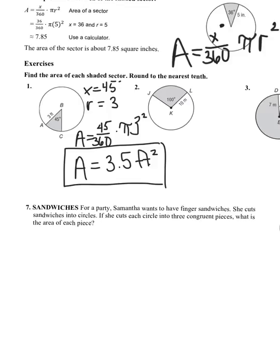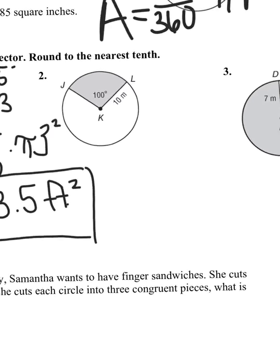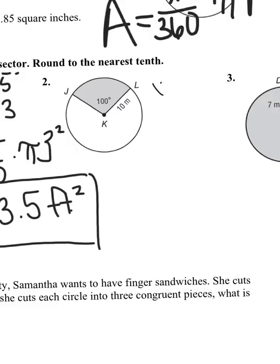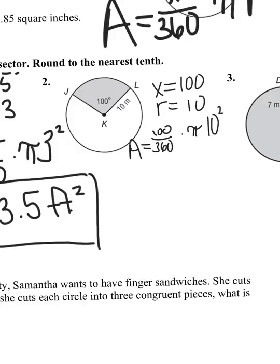Question number two is exactly the same thing. I have the degrees that are inside my circle and I'm given my radius. I'm going to label that my degrees is x, and again it's the degrees in the shaded area, and my r equals 10. For the area of this circle, area equals the degrees over 360 times pi times 10 squared. This says round to the nearest tenth, so I'm at 87.3 meters squared.